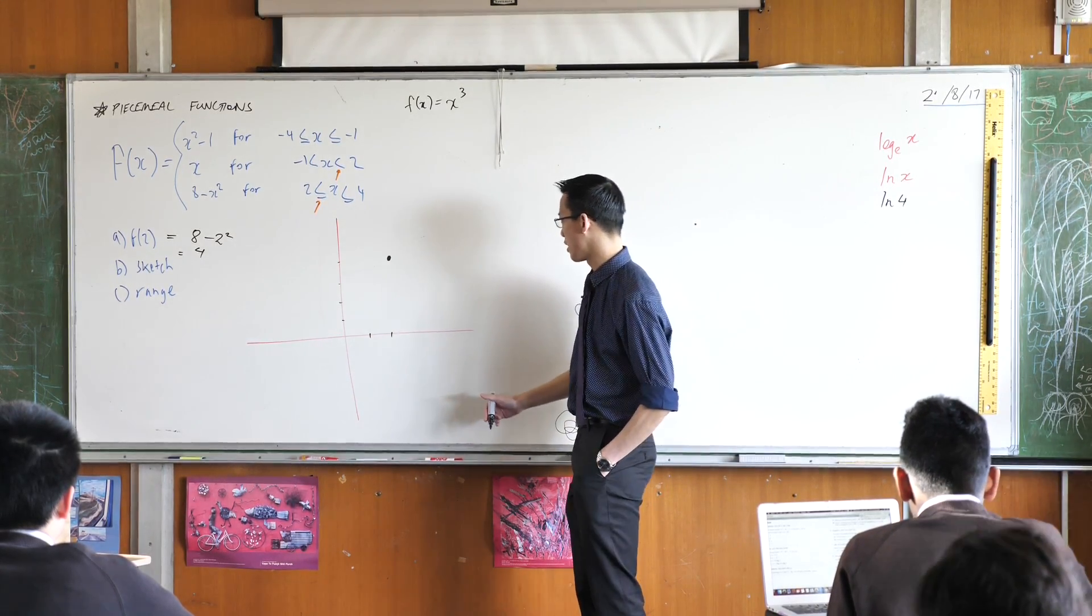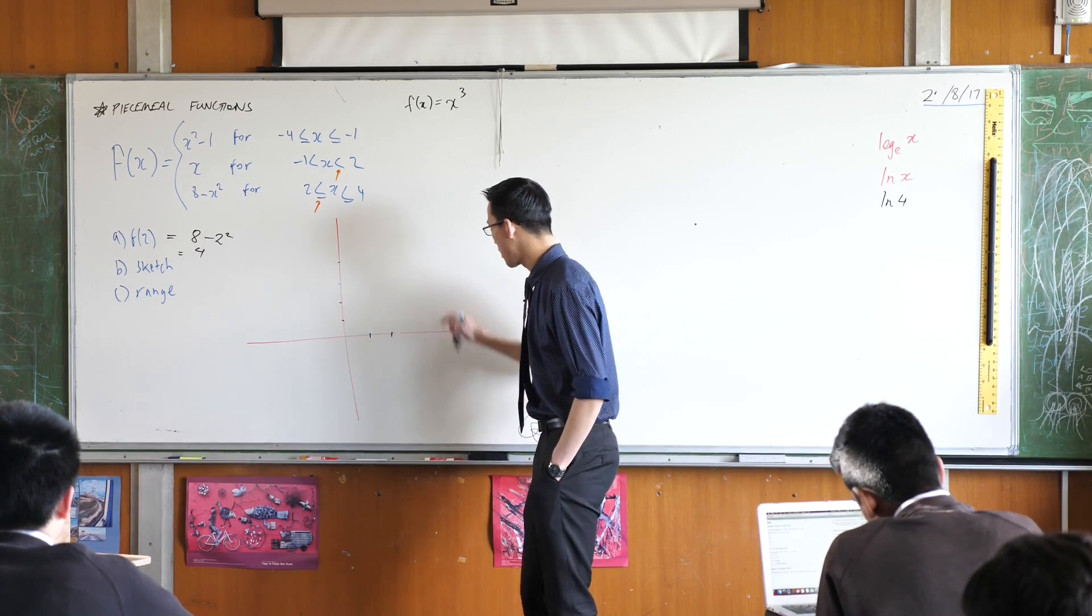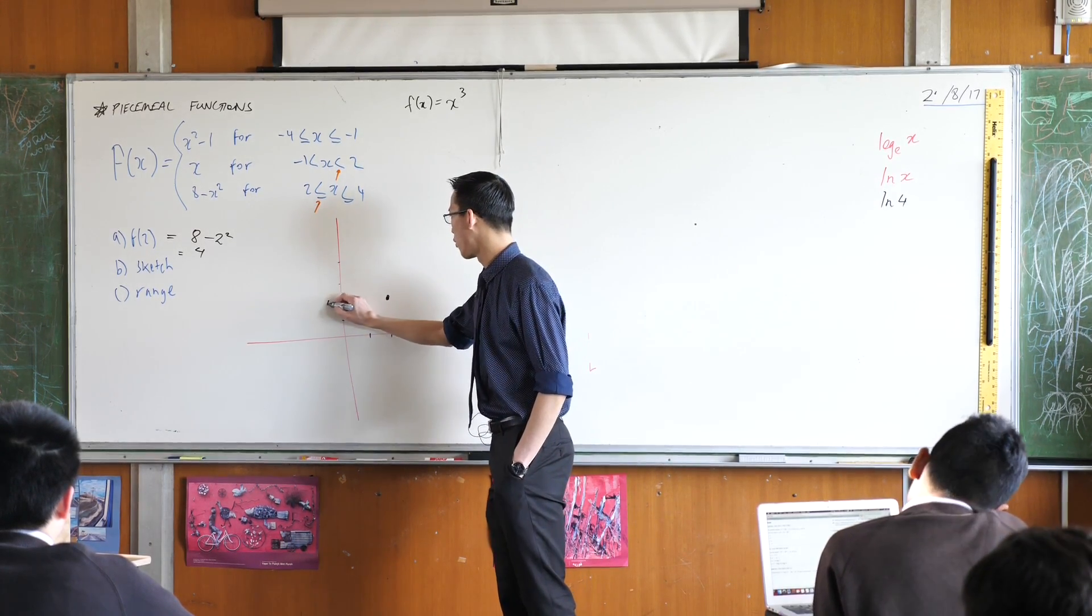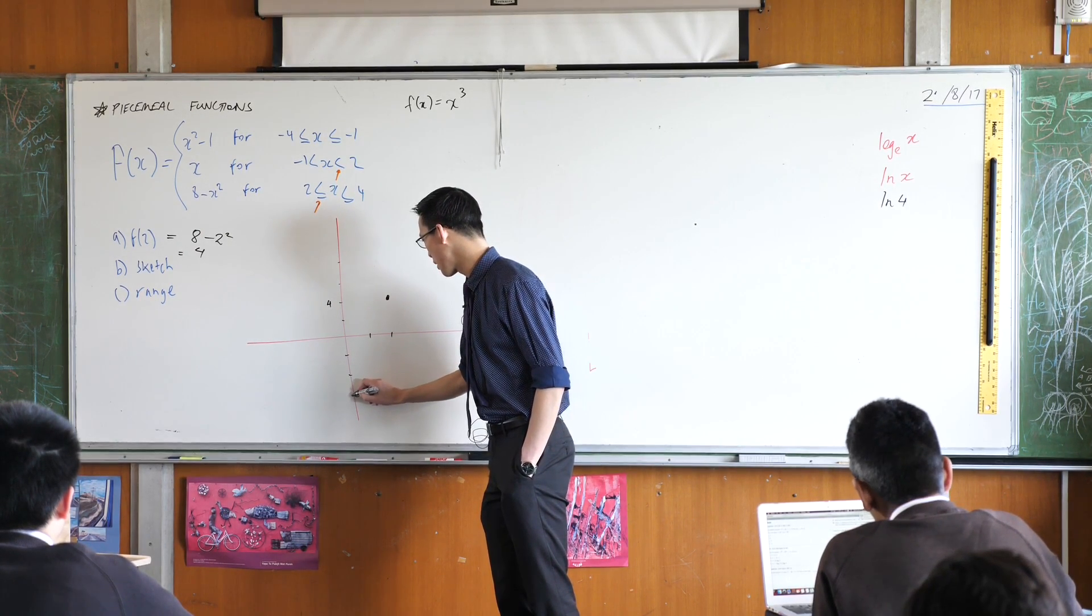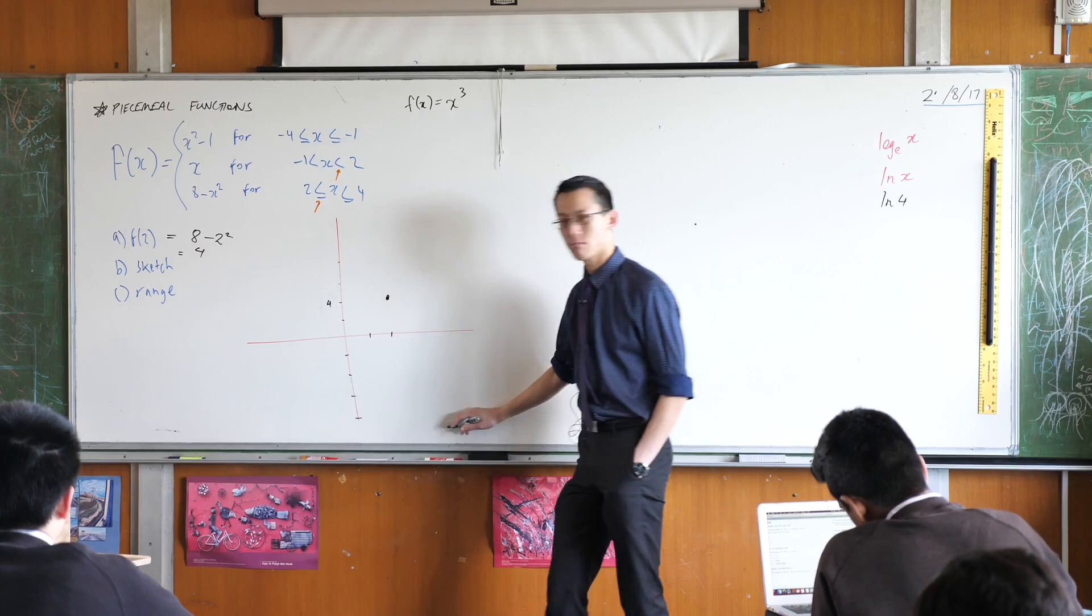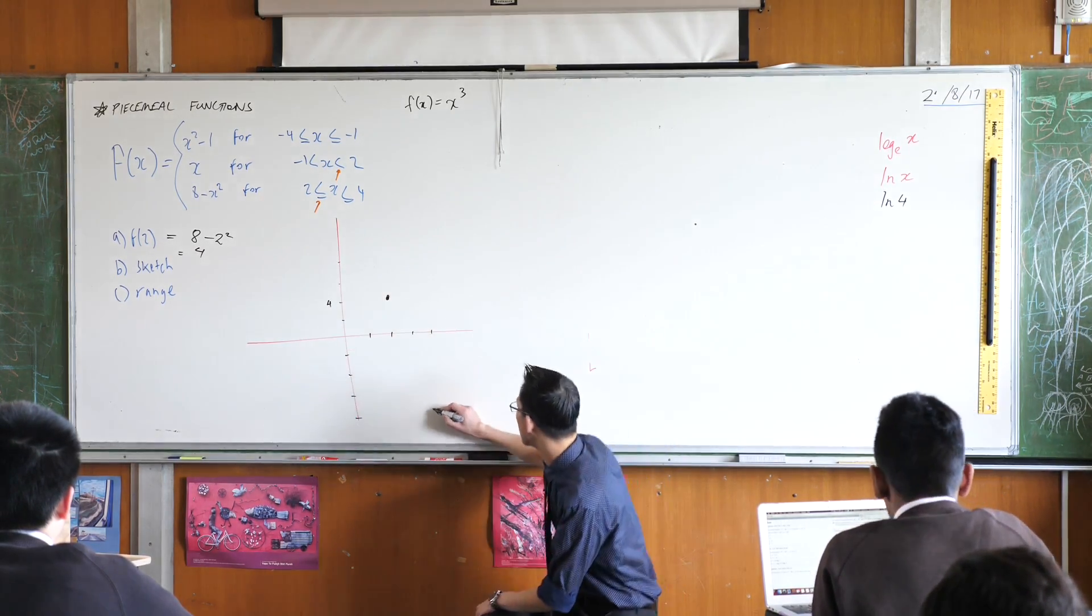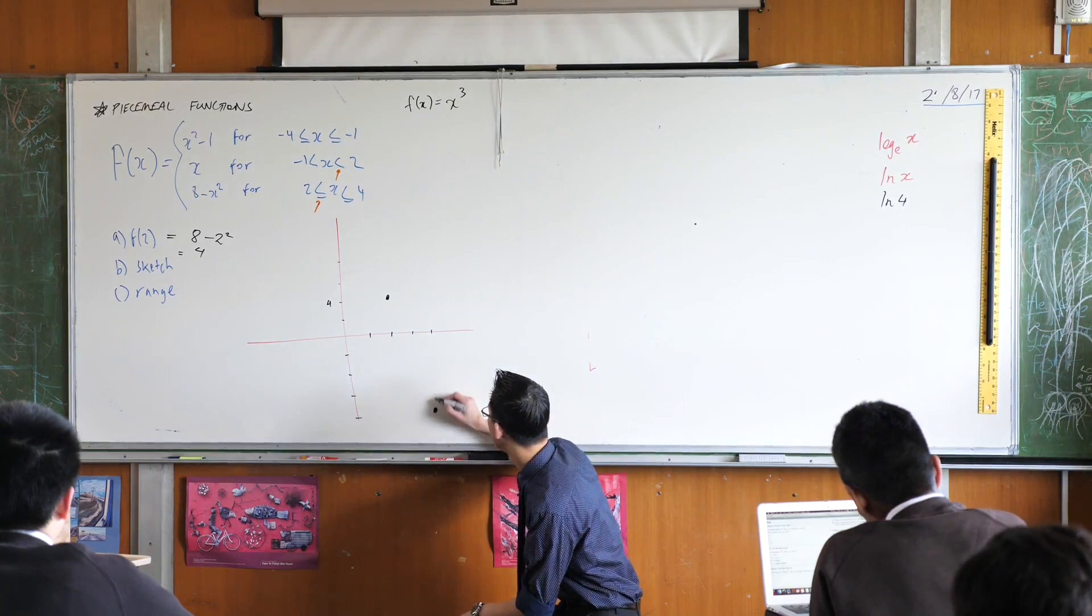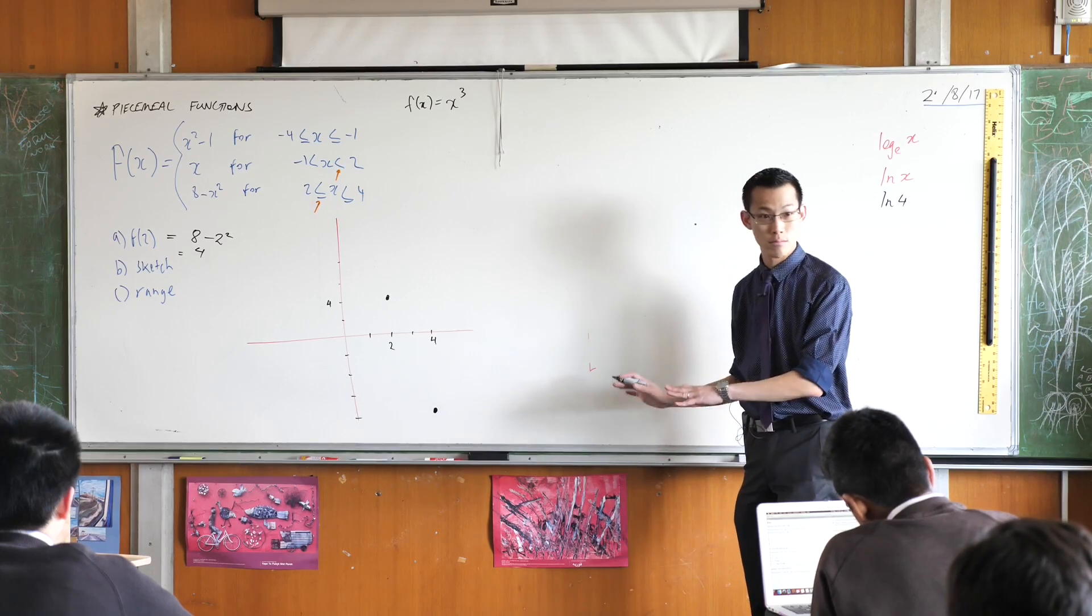So I'm actually going to need to change my scale a little bit because I don't have enough space. Let's make this 4. So that's negative 2, negative 4, negative 8, negative 16. You have x equals 4. How does it look so far? That's all right?